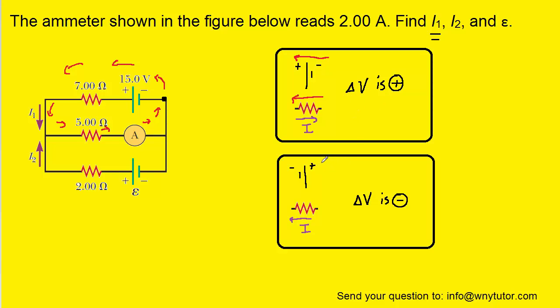On the other hand, if you encounter a battery and you move from the positive terminal to the negative terminal, then your ΔV will be negative. Also, if you are moving with the current, and again the current is shown, then your ΔV is negative.